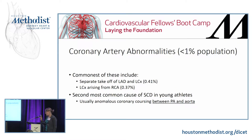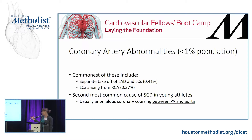Anatomical abnormalities present in less than 1% of the population include separate takeoff of the left anterior descending and circumflex, or the left circumflex arising from the RCA. As far as pathology, in sudden cardiac death in young athletes, the second most common etiology is a course of the coronary arteries between the pulmonary artery and the aorta. In systole, when the LVOT and aorta are engorged with blood, that can compress between the PA and cause ischemia.